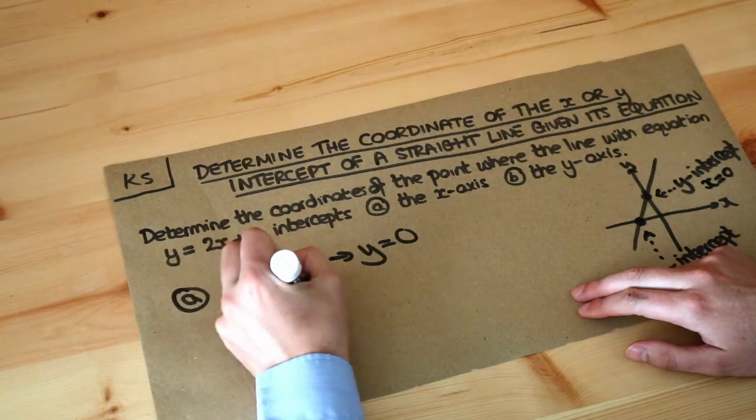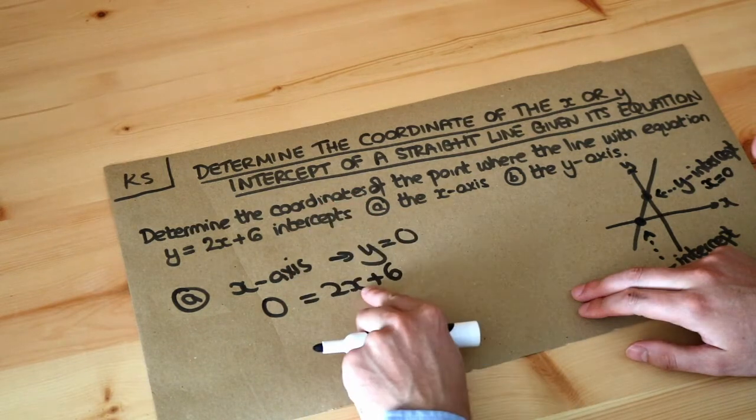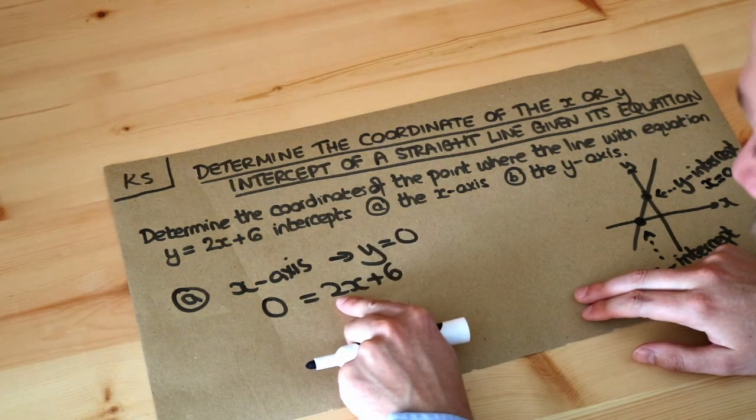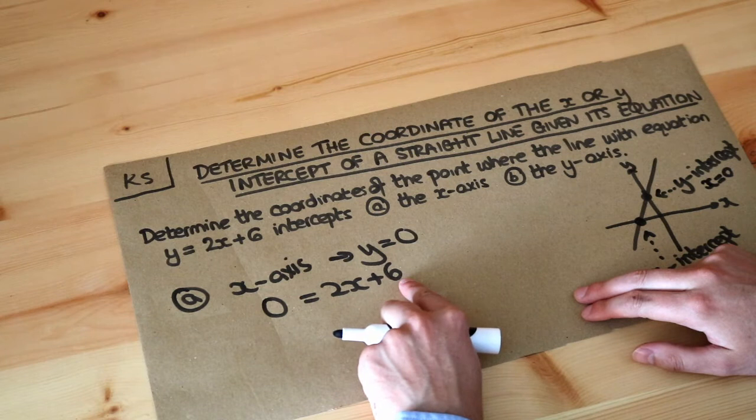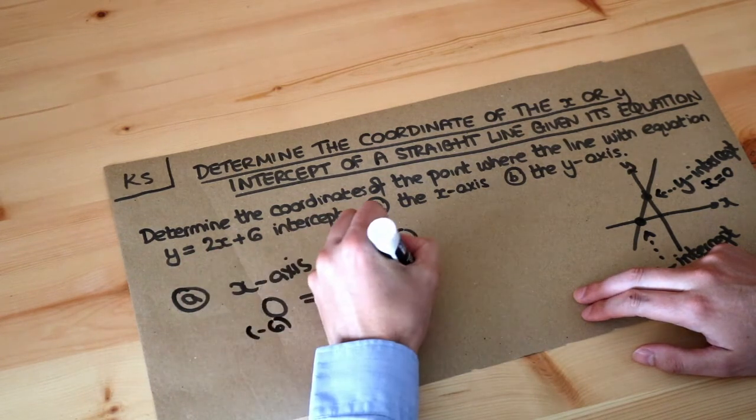We get zero equals 2x plus 6 and then we just need to solve that. So we want to get x on its own. It's been multiplied by 2, then we've added 6 to it. So we get rid of the plus 6 by subtracting 6 from both sides of the equation.